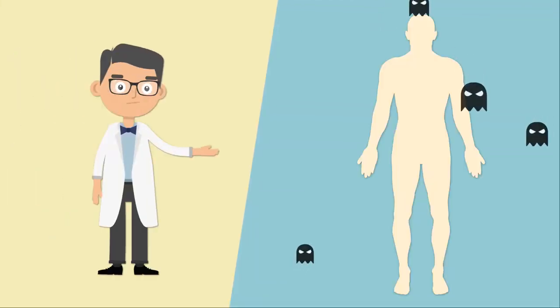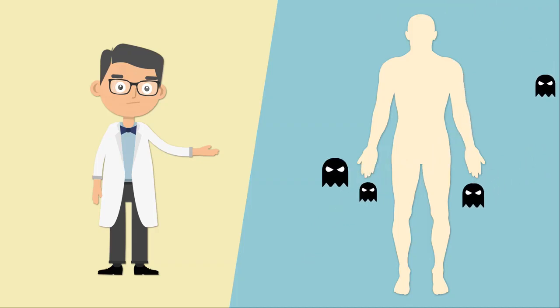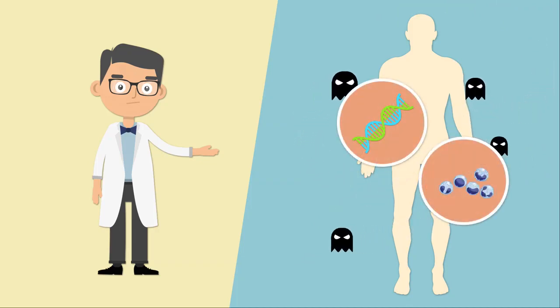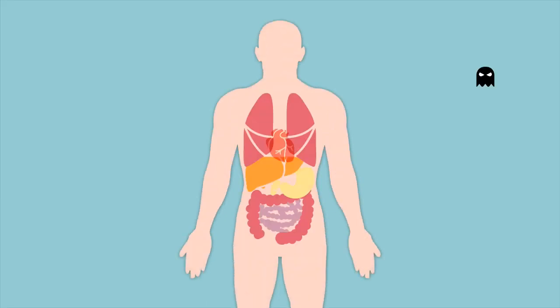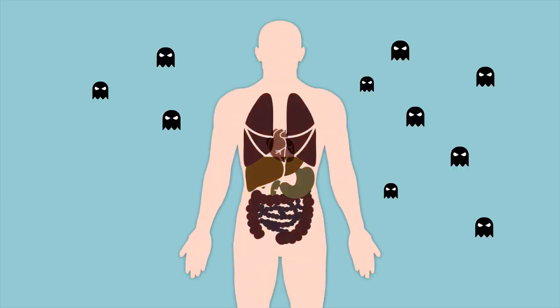Similarly, free radicals damage the inner parts of our bodies, including our cells and DNA. This leads to the faster aging of our body's organs, as well as chronic diseases such as cancer.